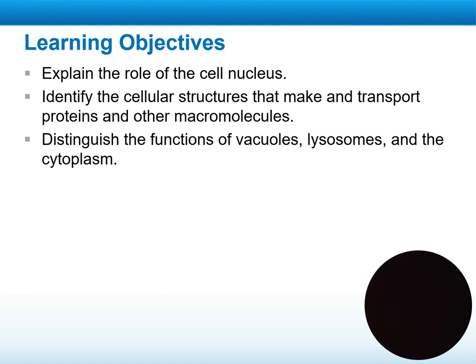After this, we will go through the two types of cells, which are the prokaryotic cells and the eukaryotic cells. We will also go through the difference between prokaryotic cells — having the cell membrane, cell wall, and the organelles inside.